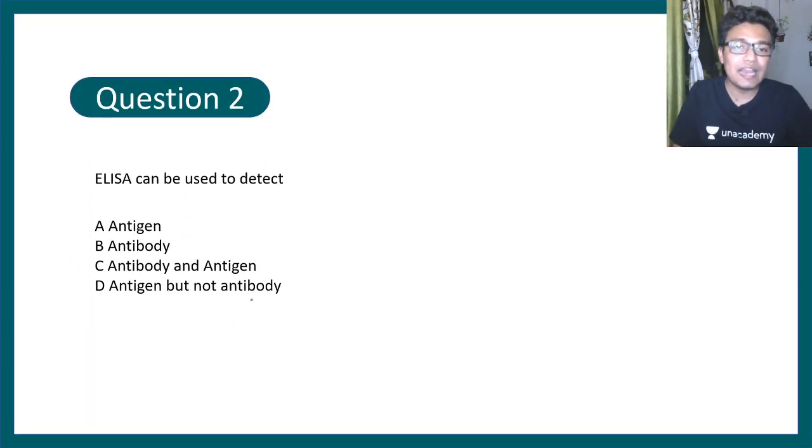Question 2 says: ELISA can be used to detect antigen, antibody, both antigen and antibody, or antigen but not antibody. You can pause this video and try to answer. The correct answer would be option C.